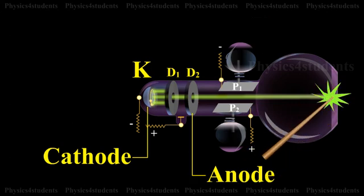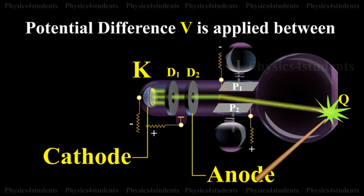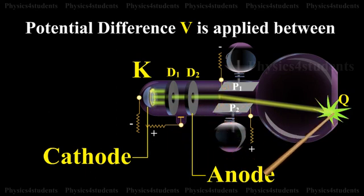A spot of light is produced at Q, but when a potential difference V is applied between P1 and P2, the beam is deflected to the point Q1.